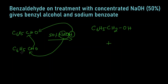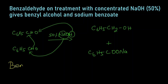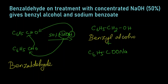The oxygen and hydrogen give us the OH group, so we get C6H5CH2OH — this is called benzyl alcohol. The remaining part, C6H5COONa, is sodium benzoate — the sodium salt of benzoic acid. So benzaldehyde reacts in the presence of 50% sodium hydroxide to give benzyl alcohol and sodium benzoate.